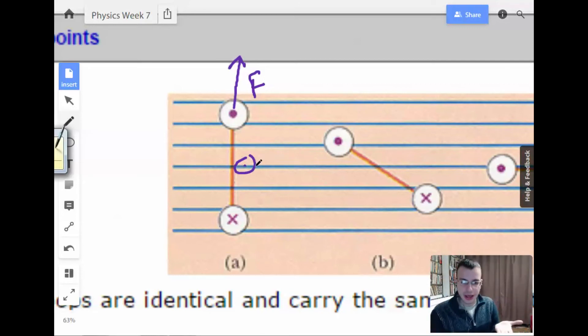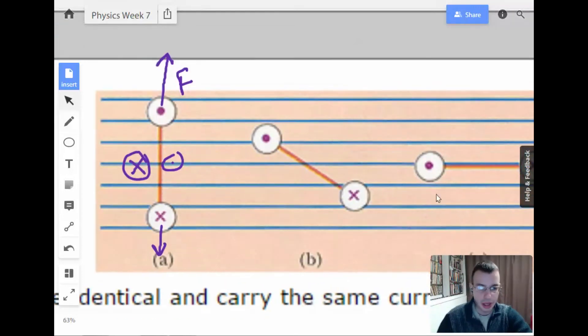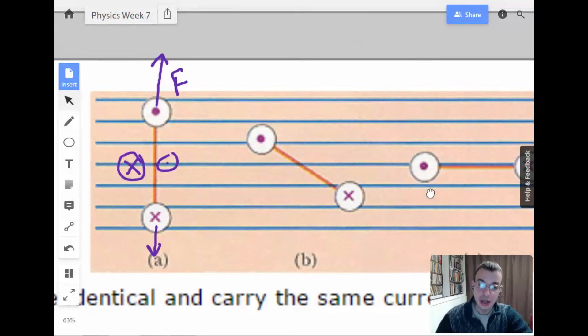Then as it goes in, we're gonna have V cross B. So, we're gonna have down. And then as the wire goes up, we're gonna have V cross B. So, it's then gonna be going into the board. All of those are in opposite directions of each other. The two up and down currents cancel, and the two in and out of the board currents cancel. So, the total net force on A is gonna be zero.